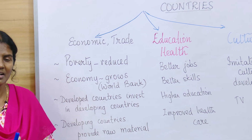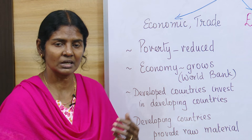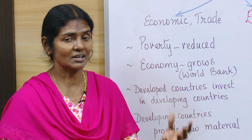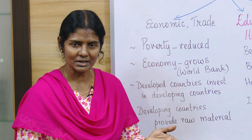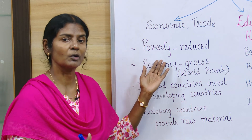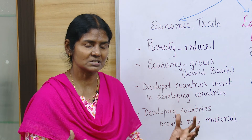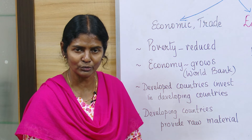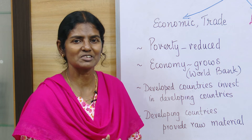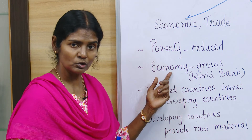The first phase is economy and trade. When developed countries invest in developing countries, the economy of the people slowly improves because they get a source of income. Even smaller products can be manufactured, marketed, and traded, which further improves the economy. Because of this, poverty is also reduced — families that once struggled to make ends meet can now improve their lifestyle.